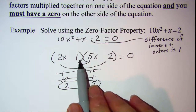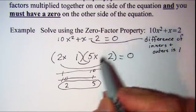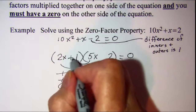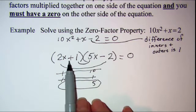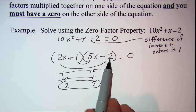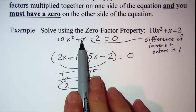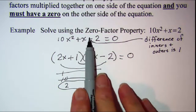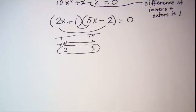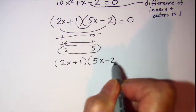To figure out which binomial gets the plus and which gets the minus, I want my bigger product to be positive since this middle term is positive. My inner product was 5x and my outer product was 4x, so the 5x needs to be positive. Let's verify: 2x times 5x is 10x squared, the outer product is negative 4x, the inner product is positive 5x — adding those gives plus x — and 1 times negative 2 is negative 2. So the factored form is (2x + 1)(5x − 2) equals zero.